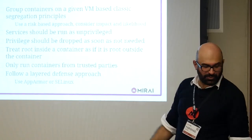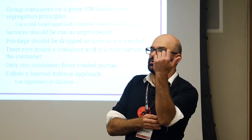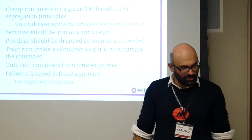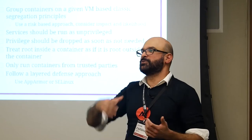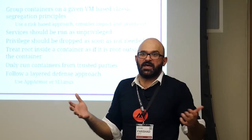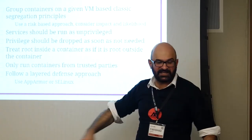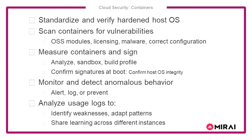Group containers on a VM based on classic segregation principles — the same way you design a network with subnets based on function criticality, create zones and utilize container separation technologies to separate containers with similar impact based on a risk profile. Services should run as unprivileged when possible and privilege should be dropped as soon as it's no longer needed — if running as root without user namespace implementation, a container could go through the kernel and execute root-level functionality in other containers. Treat root inside a container as root outside the container. Only run containers from trusted parties — with Docker you can download containers from anyone, but have you assessed what's in them?